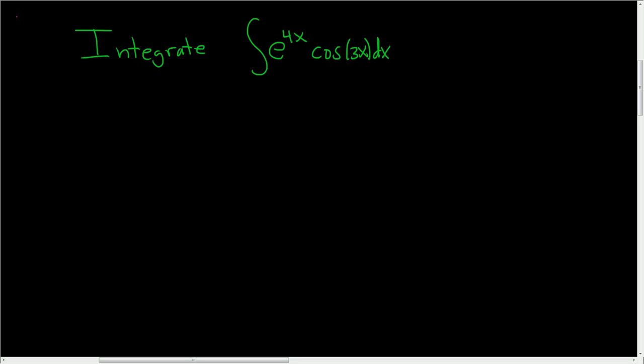We're being asked to integrate e to the 4x times the cosine of 3x. In this problem we're going to use integration by parts. This is like a classic integration by parts problem.